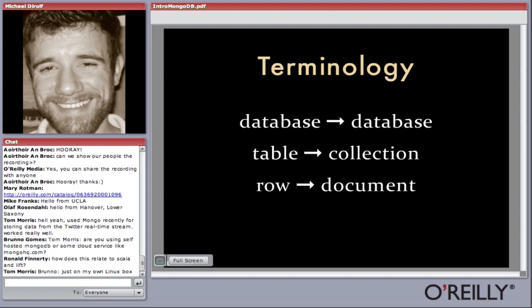First, I wanted to cover some basic terminology. When I say 'database,' if you're used to relational databases, you can think of it as basically exactly what we mean by a database in MySQL. A database is an independent set of data; people tend to create a database for a given application. Each database in MongoDB is stored completely independently on disk, but a single server can have multiple databases. When I say 'collection,' that's the equivalent of a table in a relational database. There are some semantic differences, which is why we have a different term for it.